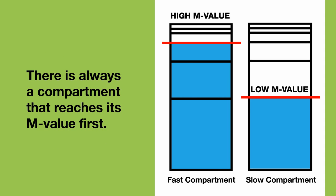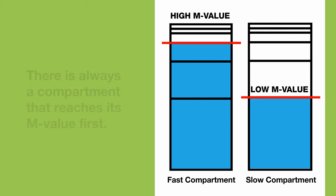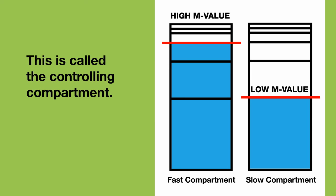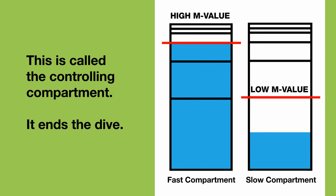During a dive, there is always one compartment that reaches its M value first — it can handle no more nitrogen safely. We call this the controlling compartment. It controls your dive; it is the compartment that ends your dive.